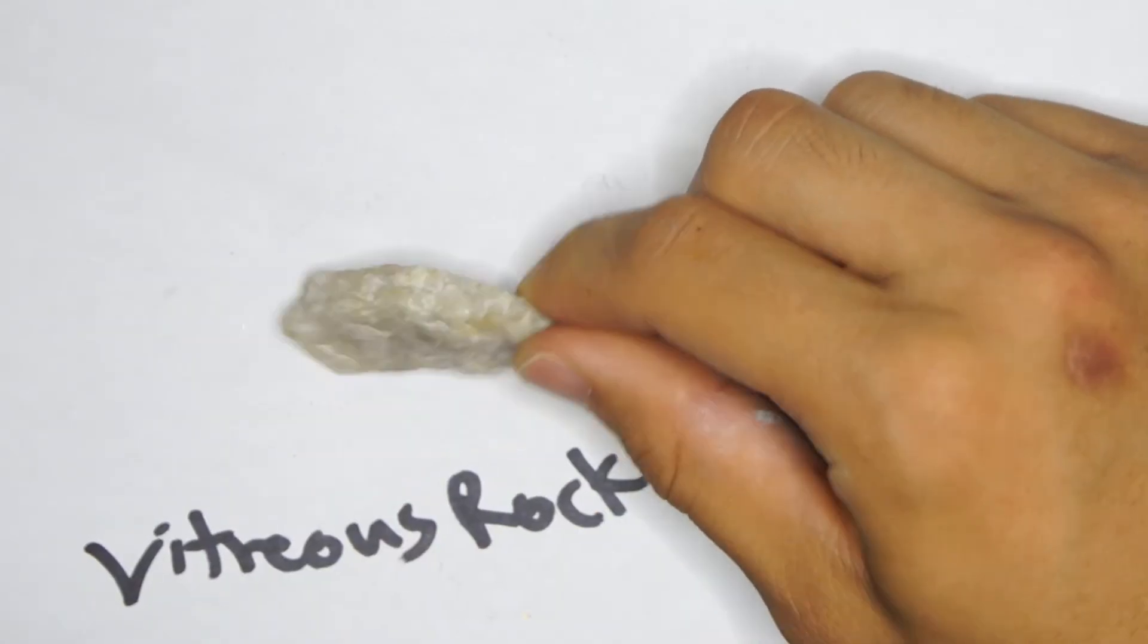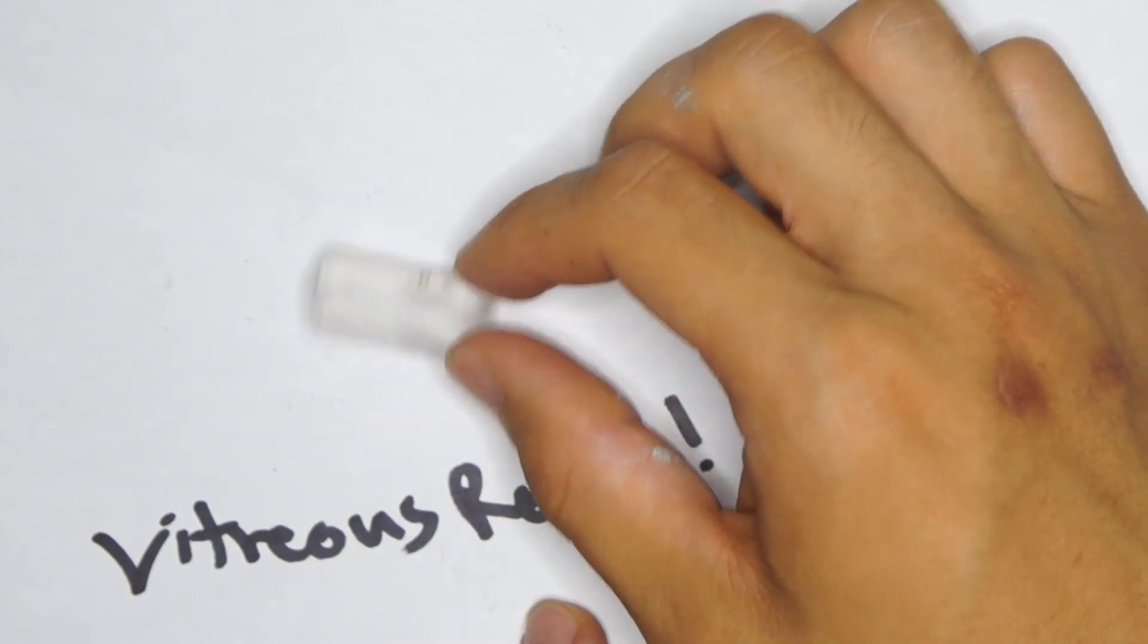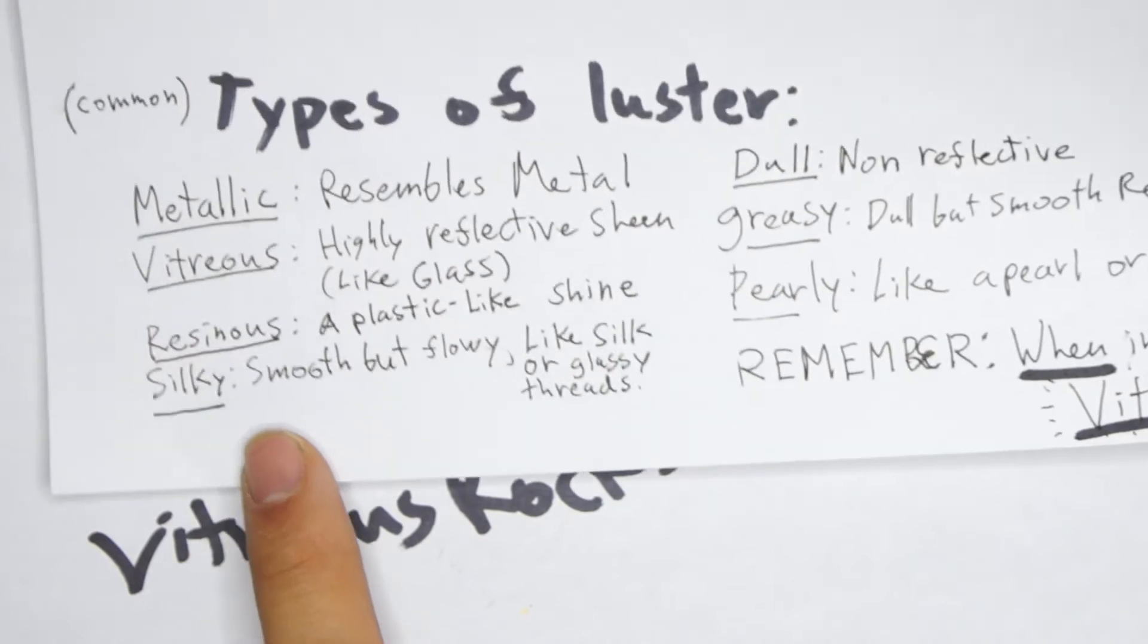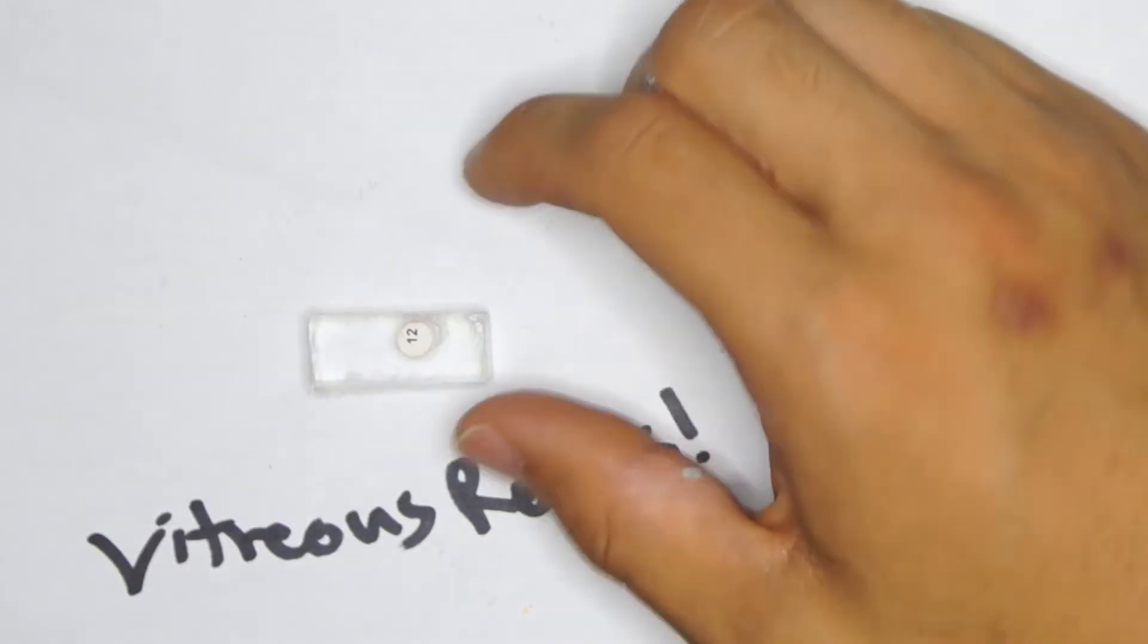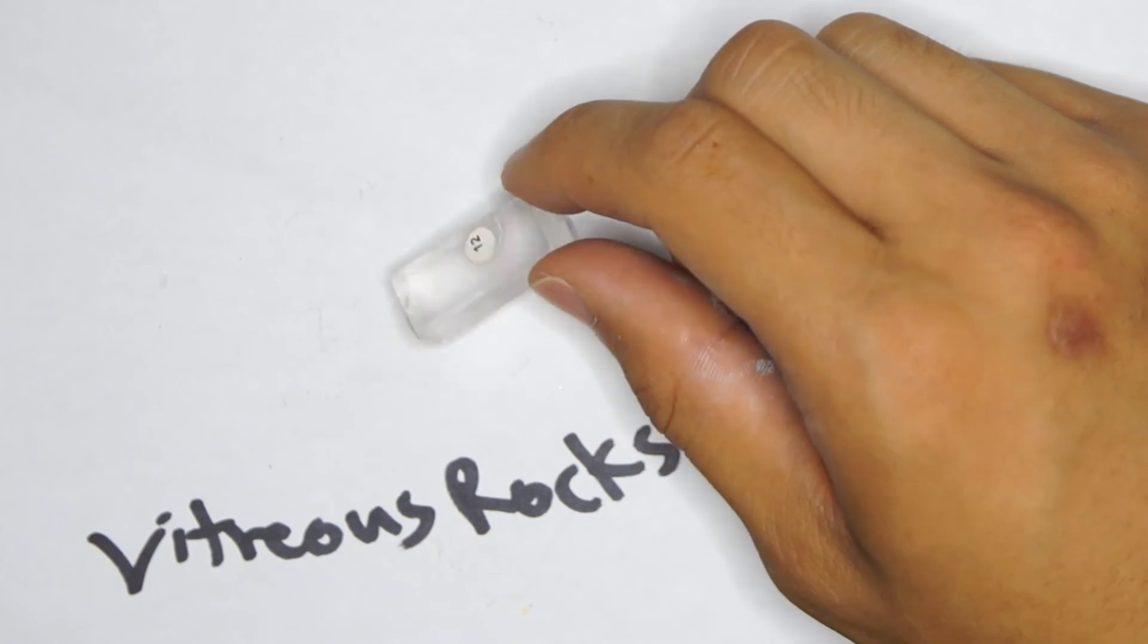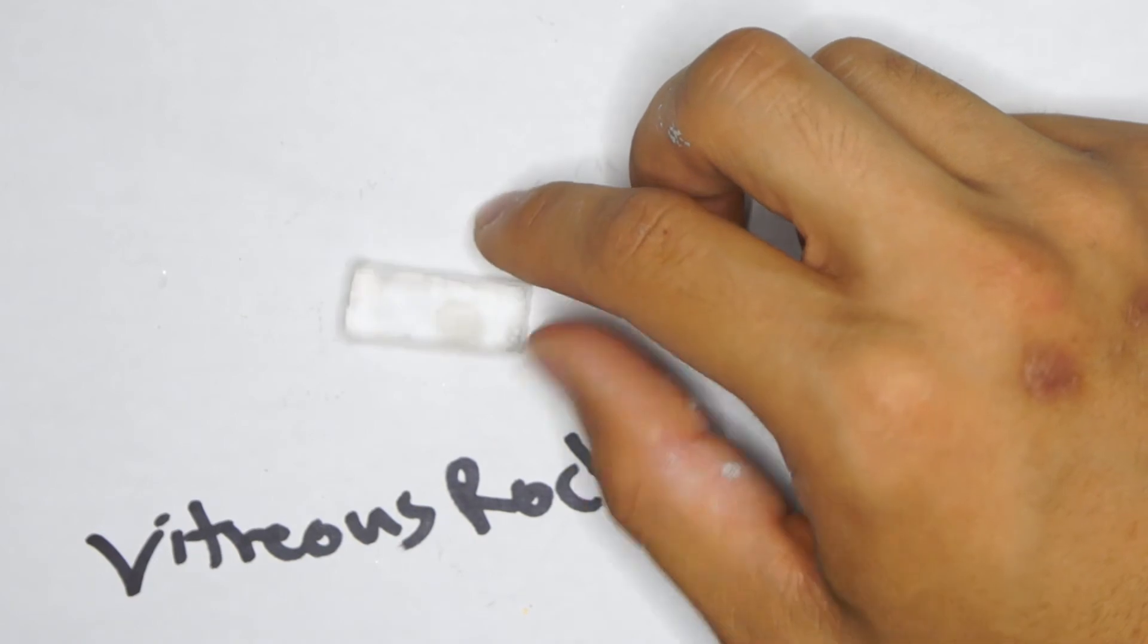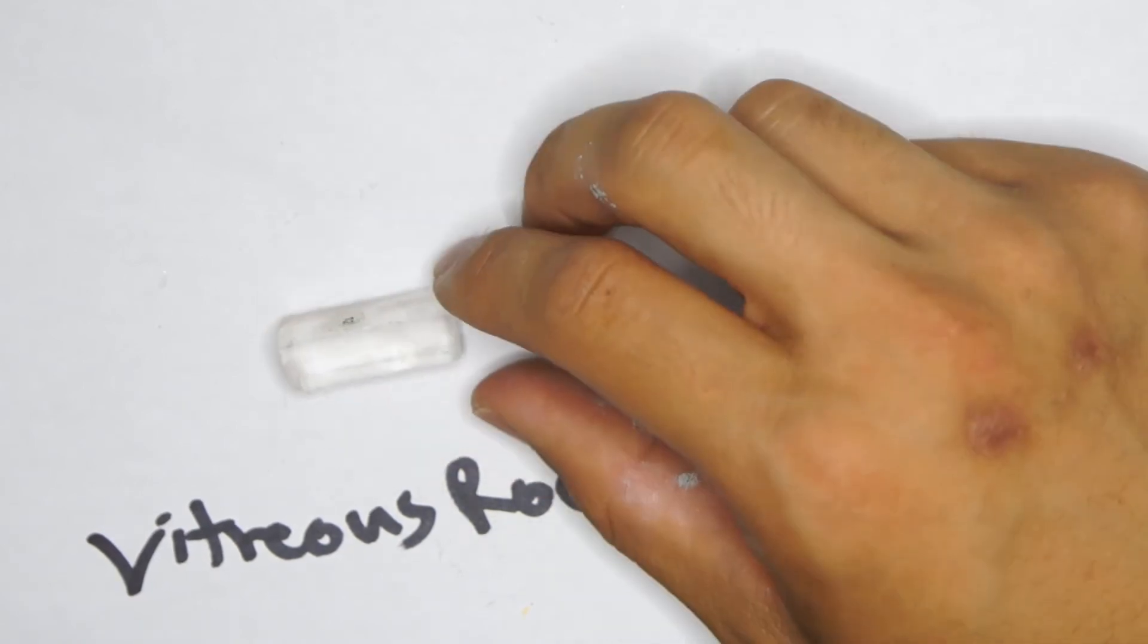When in doubt, it's vitreous. Now some rocks you can get away with saying they're resinous, perhaps. Going back to that list, resinous means it's plastic-like. This rock, you might be able to get away with saying it has a plastic-like reflection, right? You know the difference between a plastic window and a glass window. It's kind of the same idea.